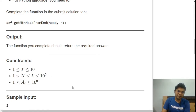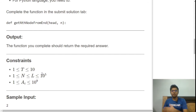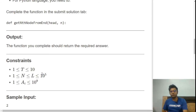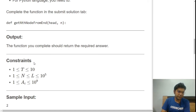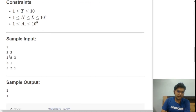The constraints are: test cases range from 1 to 10, the node position N and the length L range from 1 to 10^5, and node values can range up to 10^9. These constraints are important when considering time complexity for the solution.